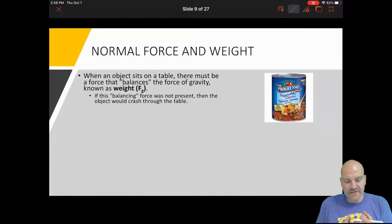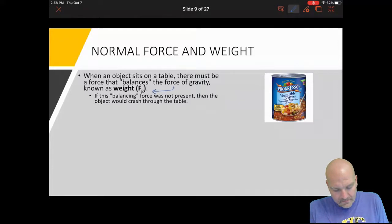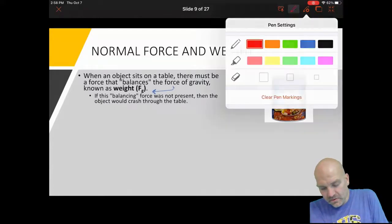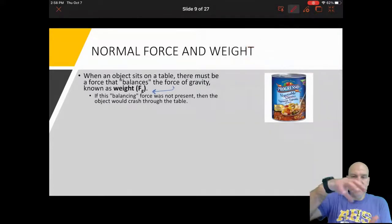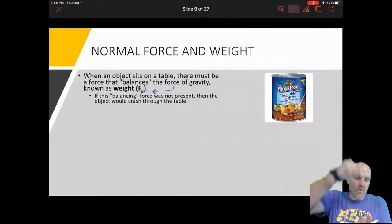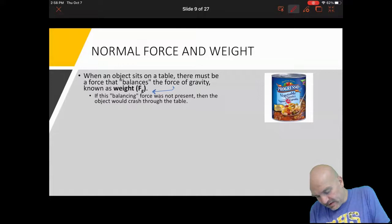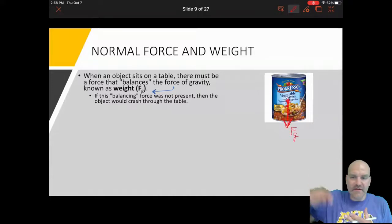When an object sits on a table, there must be a force that balances the force of gravity, which we call weight. Object on table, right. The earth is trying to pull that object down. So if I'm looking at my can of soup here, the earth wants to pull it down towards the side of the earth.